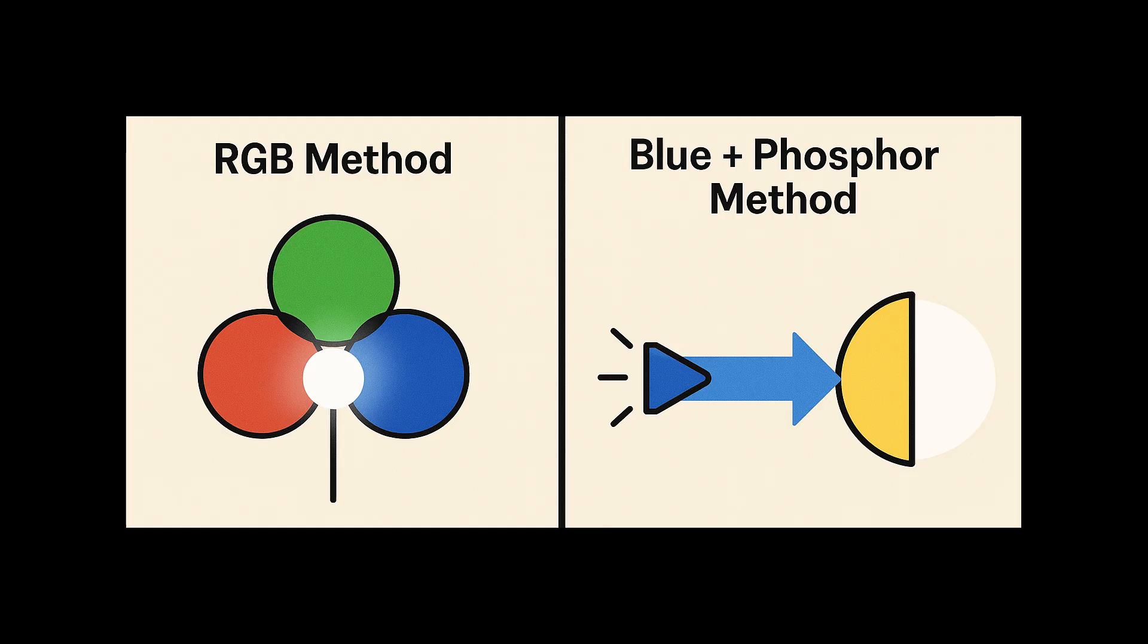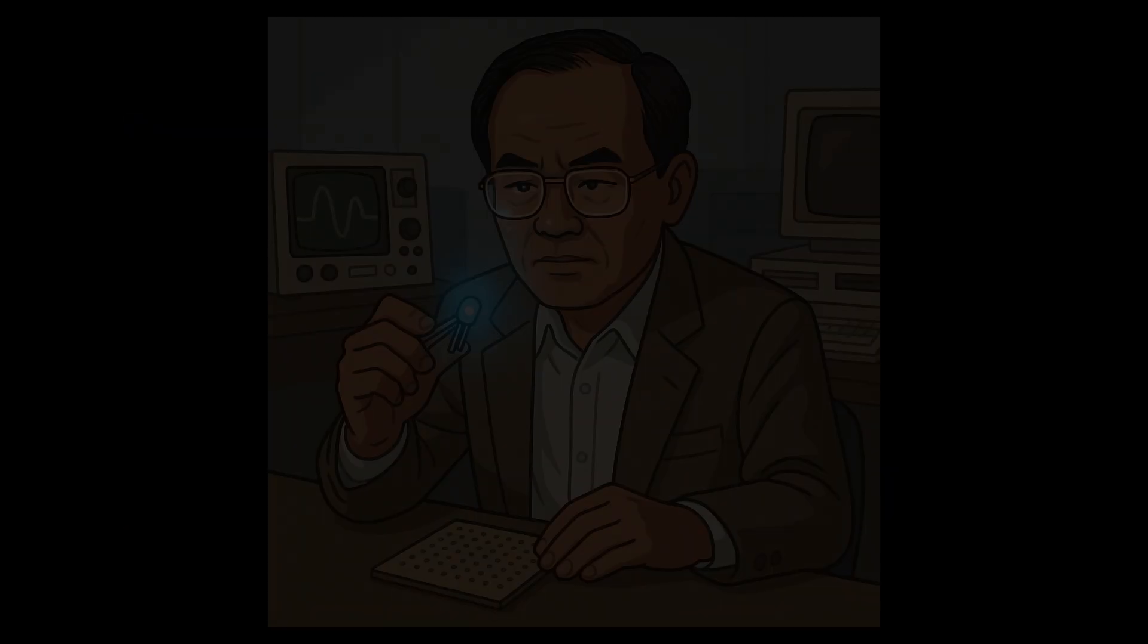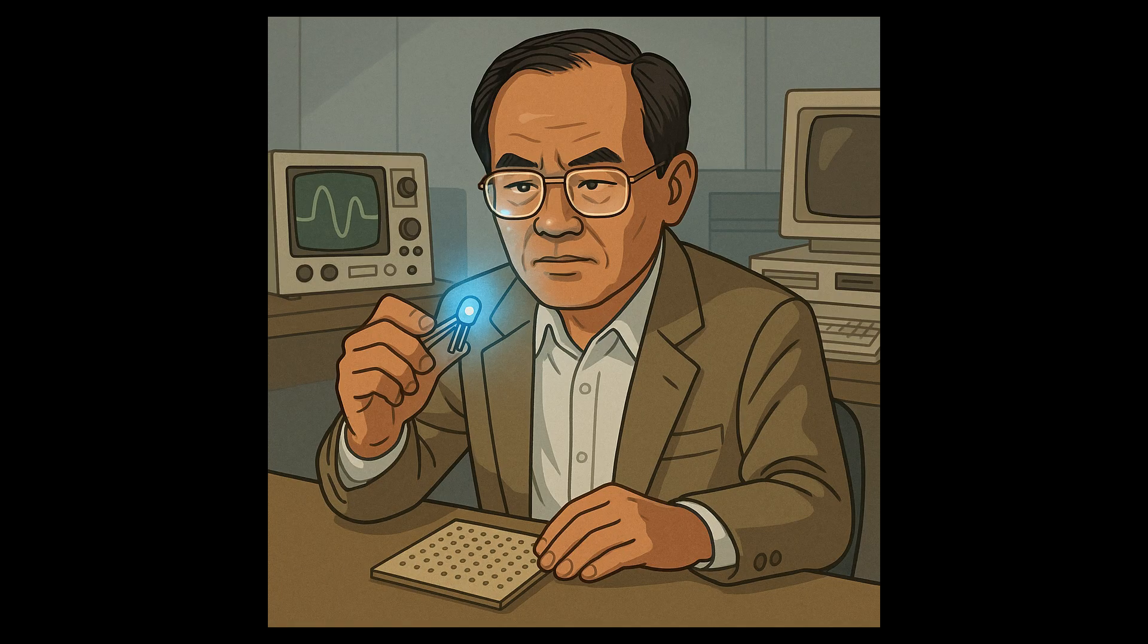But today, most white LEDs you buy use the phosphor method because it's cheaper, easier, and scalable. So the next time you turn on a light, thank Shuji Nakamura, the guy who figured out how to make blue diodes glow. Like I said, an absolute legend.